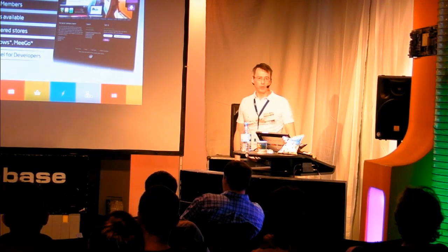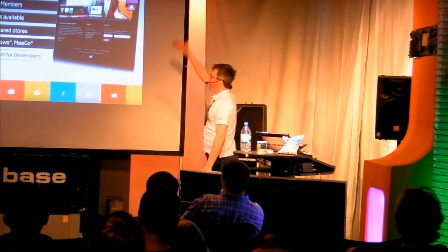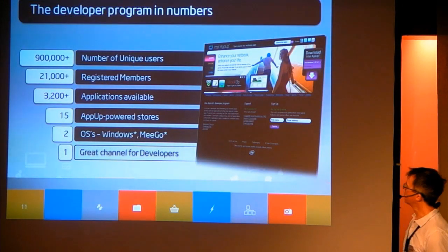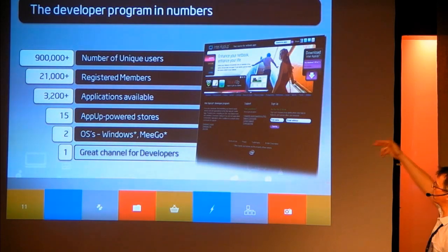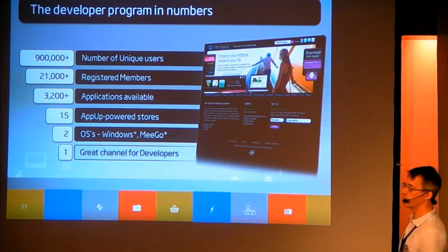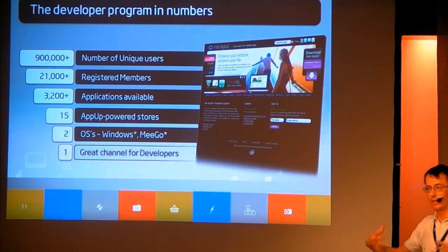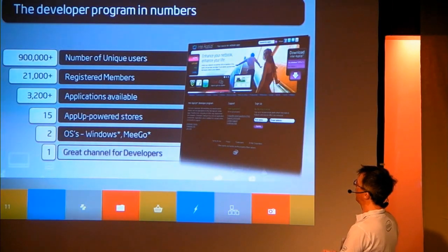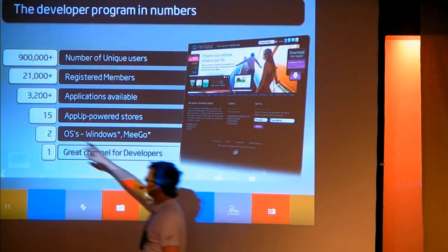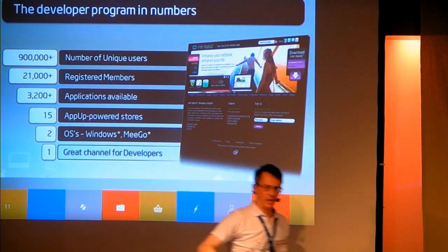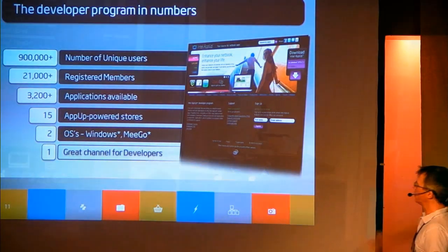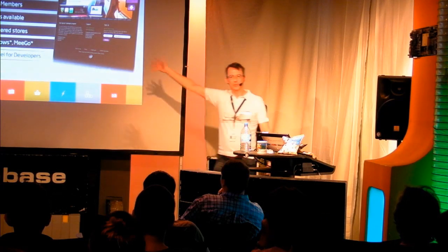How far have we got so far? On the Windows side we have about 3,200 applications, 21,000 registered members to the program — that is developers, not users — 21,000 developers participating in the program. It says 15 stores here — 15 AppUp-powered stores. I will tell you why it is 15 and not 1 in a few moments. It says 2 operating systems: Windows and Mego obviously.